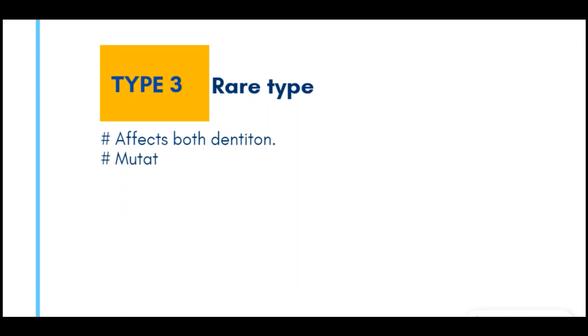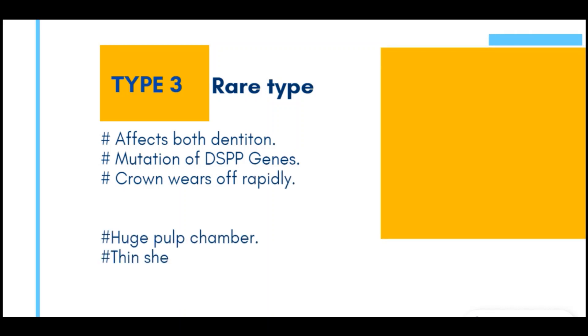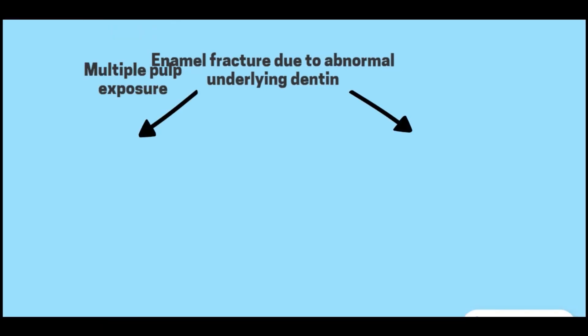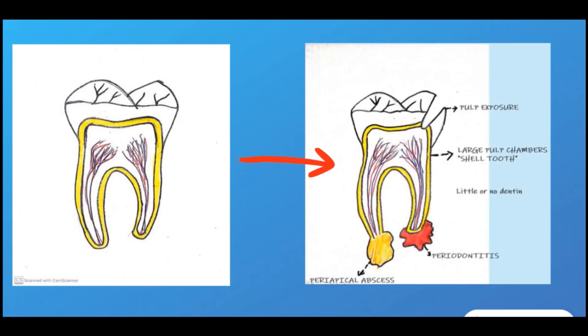Type 3 is the rare type and affects both dentitions. It is also caused by mutation of the DSPP gene. In this type, the crown wears off rapidly. Radiographs show a huge pulp chamber and a thin shell of dentine, giving a shell teeth appearance. Enamel is fractured due to abnormal underlying dentine, causing multiple pulp exposures and periapical lesions such as periapical abscess and apical periodontitis. This figure shows periodontitis and periapical abscess due to pulp exposure.